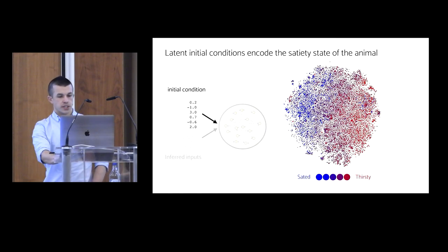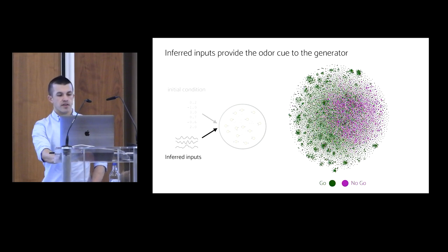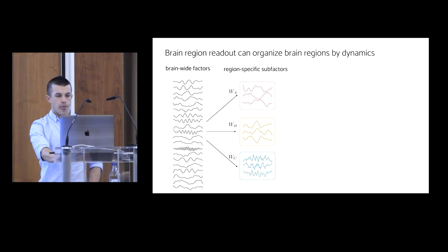Consistent with this intuition, we can look at the initial conditions that LFADS chooses for each trial. Visualizing these using T-SNE, we can see that the motivational state of the animal is reliably encoded in the initial conditions from which we can decode thirsty versus sated with above 90% accuracy. And the time-varying inferred inputs are a bit more complex, but they do convey the odor identity, which we can intuit would be to direct the dynamics towards lick or no lick.